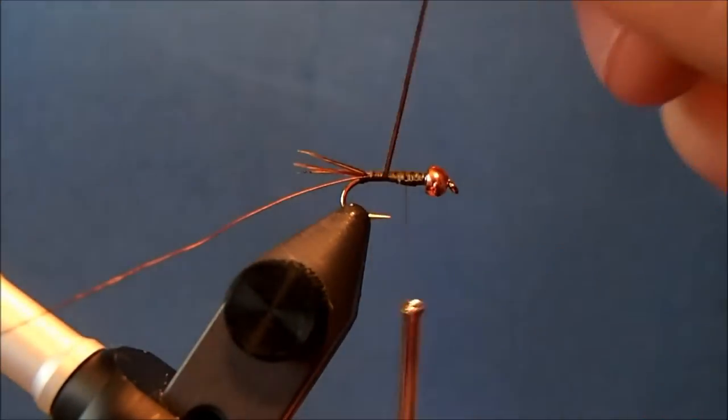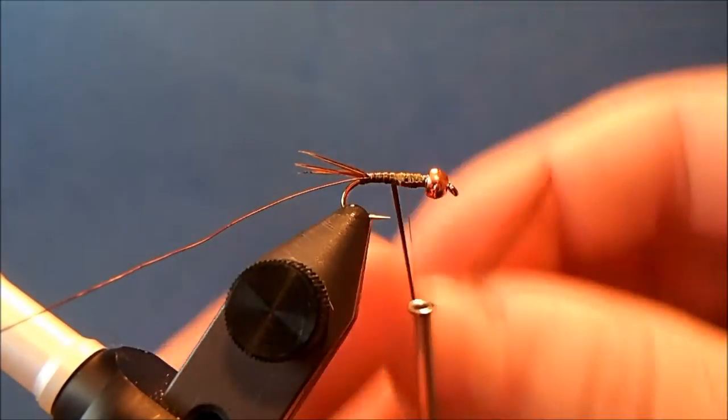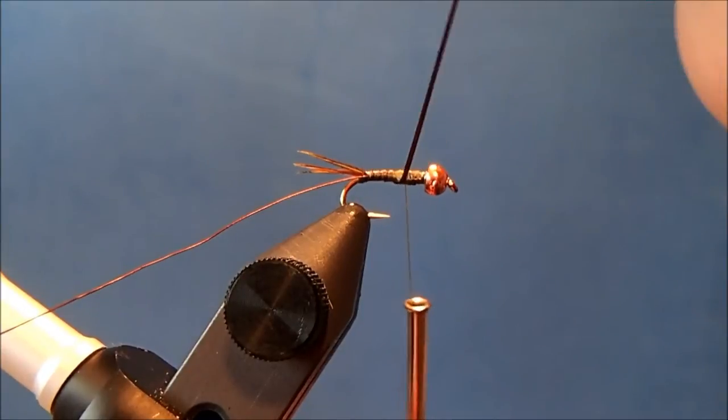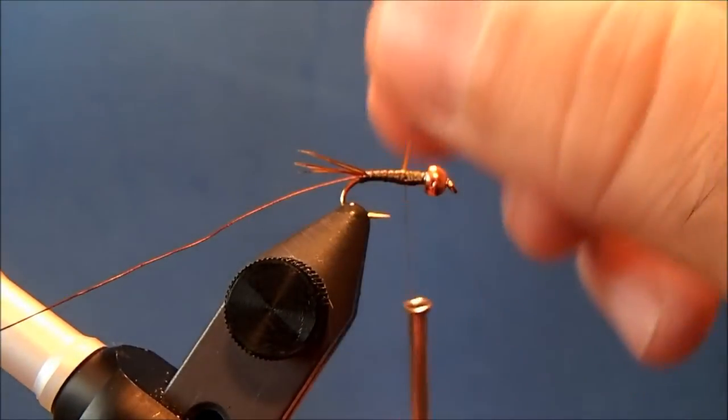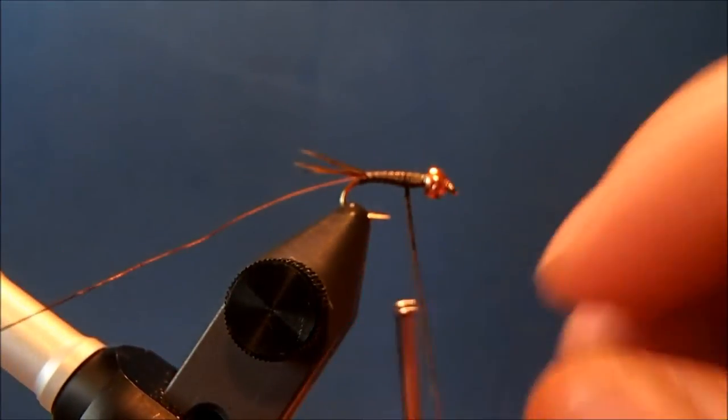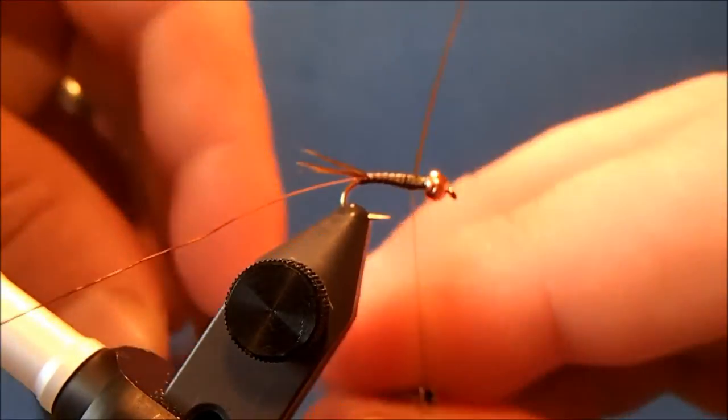Now I'm just going to bring these wraps up nice side by side. I'll overwrap just slightly when I get to my thread, then tie it off. I'll trim the excess.